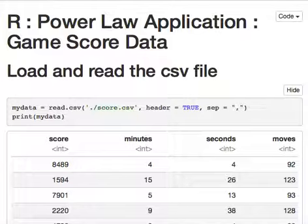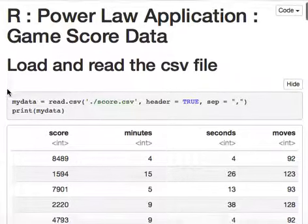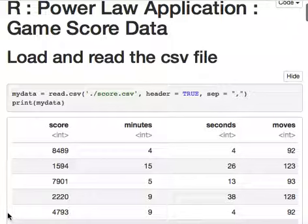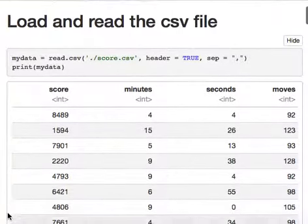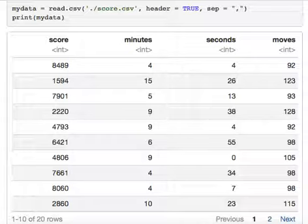The application of power law function in game score data using R statistics. Step 1: Load and read the CSV file. You may pause this video and copy the data on the screen or download the data in the provided link below.